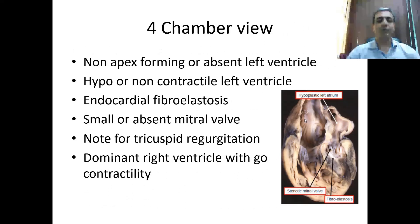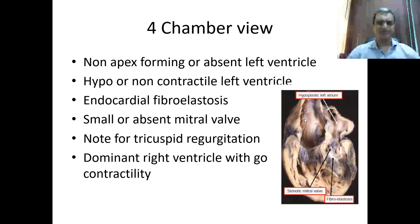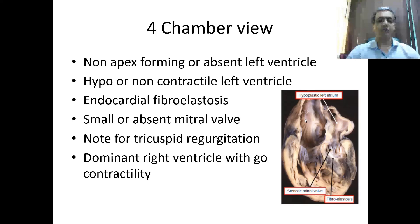Coming to the four-chamber view of the heart, we will see a non-apex-forming or absent left ventricle. The left ventricle may be hypo-contractile or non-contractile, with endocardial fibroelastosis and absent or small mitral valve. Also look for tricuspid regurgitation — it is an ominous sign; if present, chances of survival are not so good. The right ventricle will be dominant with good contractility.